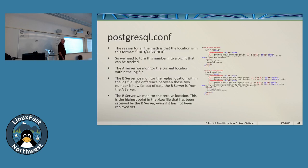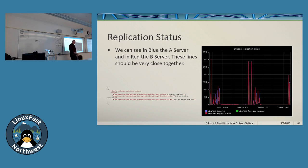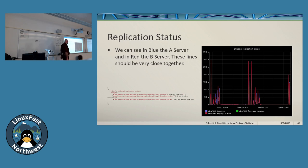For A versus B server replication lag, you want to know how far your primary is from your secondary. This graph shows the WAL file position between the two servers. It's much nicer in Grafana because you can take the difference of the two values as a single stat and show how many bytes or how much time the B server is behind the A server.